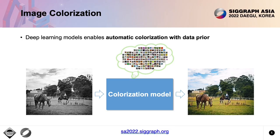The success of deep learning enables image colorization to be performed fully automatically. By utilizing prior knowledge from large-scale datasets, the colorization model knows the color of various objects. For example, the sky is mostly blue, the trees are green, and the horses are generally brown.